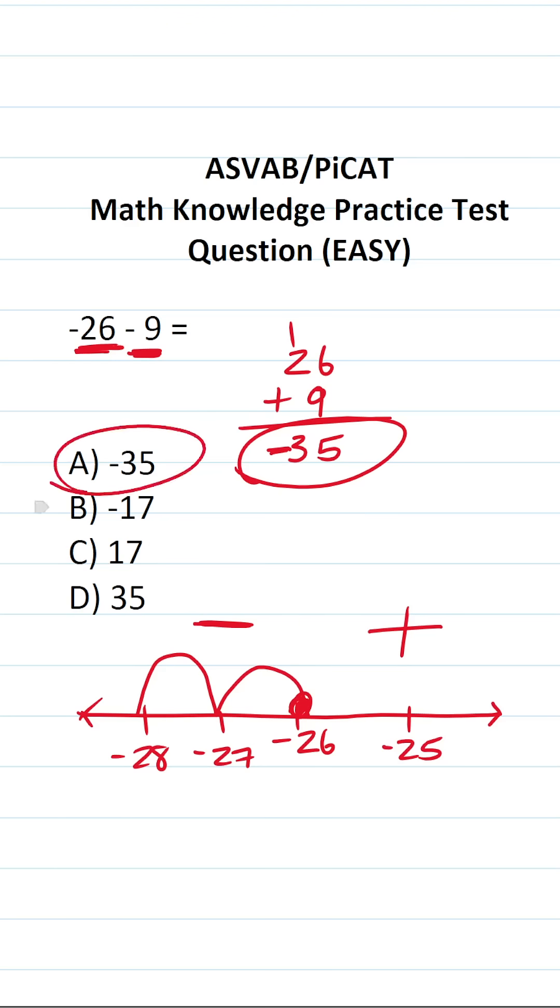All right. So this one is A. Make sure you can do addition and subtraction with positive and negative numbers. This is one of the easier questions that frequently shows up on the ASVAB and PyCat.